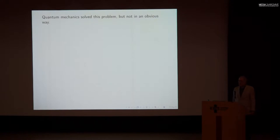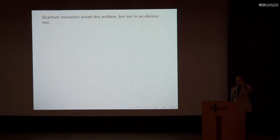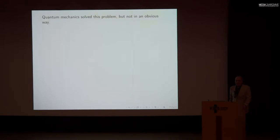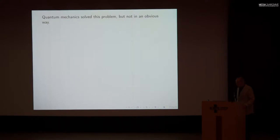What would be an example of an obvious solution? Maybe the electron isn't a point particle, but is a little ball of charge. Then you would find that the problem is less severe if the electron is a little ball of charge. The only trouble is that the cure is worse than the disease — you then face questions like what holds the ball of charge together, what describes its motion, and so on.